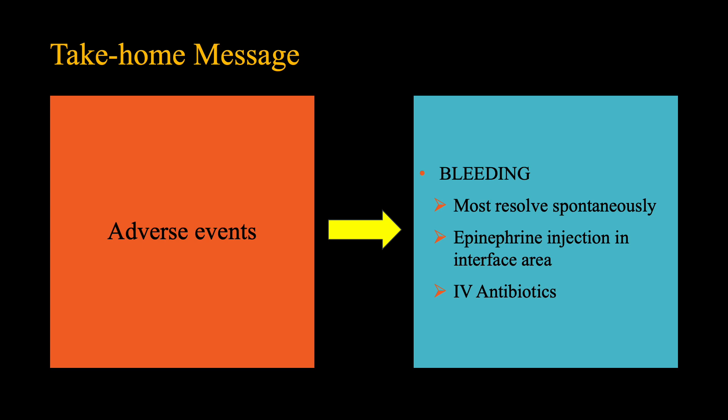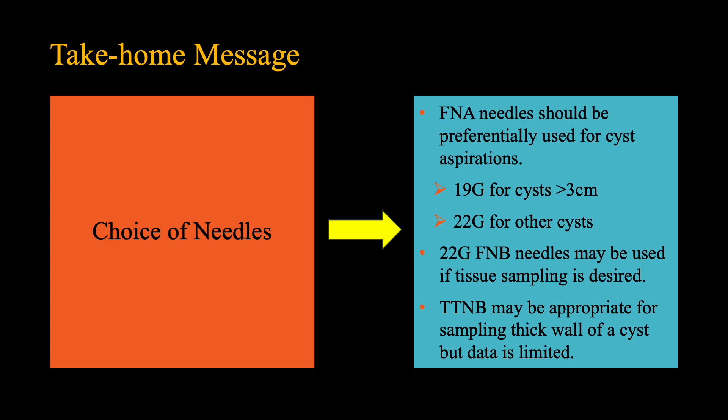Intravenous antibiotics must be administered for all patients with bleeding. A 19-gauge FNA needle may be used for aspiration of large cysts, as the cyst can be more rapidly evacuated and thick mucin suctioned better. For aspiration of small cysts, a 22-gauge FNA needle is recommended. A 22-gauge FNB needle may be used if tissue sampling is desired, such as in cases with thick walls or in cysts with a mass component. Alternatively, a through-the-needle biopsy forceps may be used, but the data are limited.